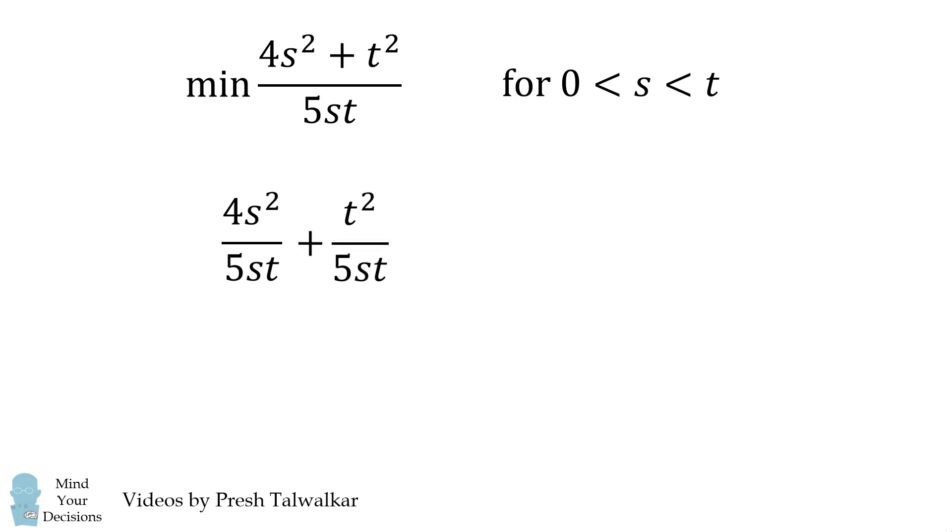Dividing through by 5st, we get 4 fifths s over t plus 1 fifths t over s. If we let u equal s over t, then t over s will equal 1 over u. We can substitute those in and we get a function in one variable u.